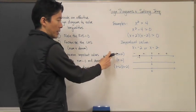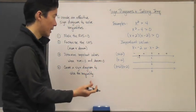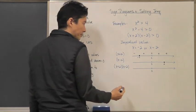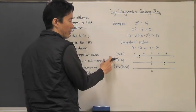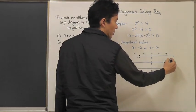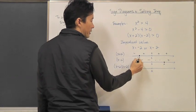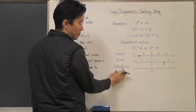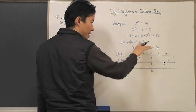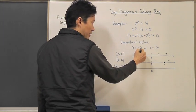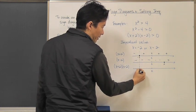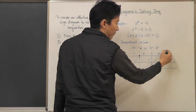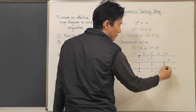Everything to the left of negative 2 makes x plus 2 a negative value. I'm going to do exactly the same thing for x minus 2: it is zero at x equals 2. If I put in 3, then 3 minus 2 is 1, so that's a positive value, and everything to the left of 2 is going to be negative. Now I'm going to look at what happens when I multiply these two values together — going down, I know the value at negative 2 is still zero because zero times anything is zero.